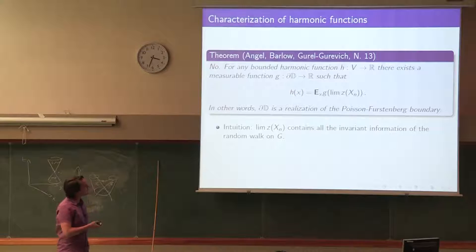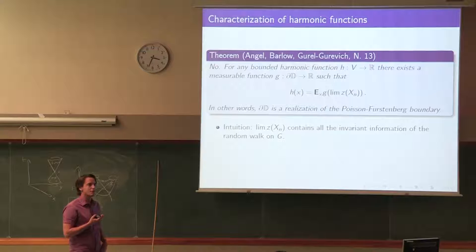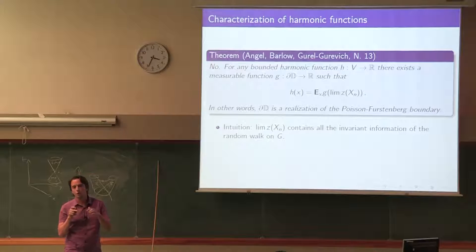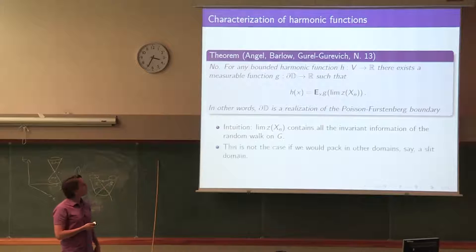You can ask whether the unit circle is a realization of the Poisson boundary — that is, are all harmonic functions represented this way? The answer is yes. We proved that any harmonic function on the graph can be obtained as a harmonic extension of some function on the boundary. Once you know where the random walker converges to, this contains all the invariant information — you cannot have additional information from the direction of convergence.